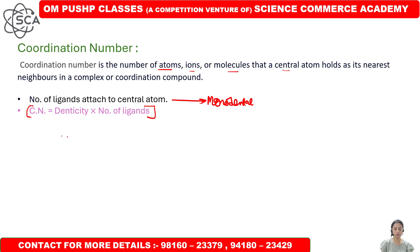Let's take an example. For example, let's take Co(NH3)6. Now we have to find the Coordination Number.